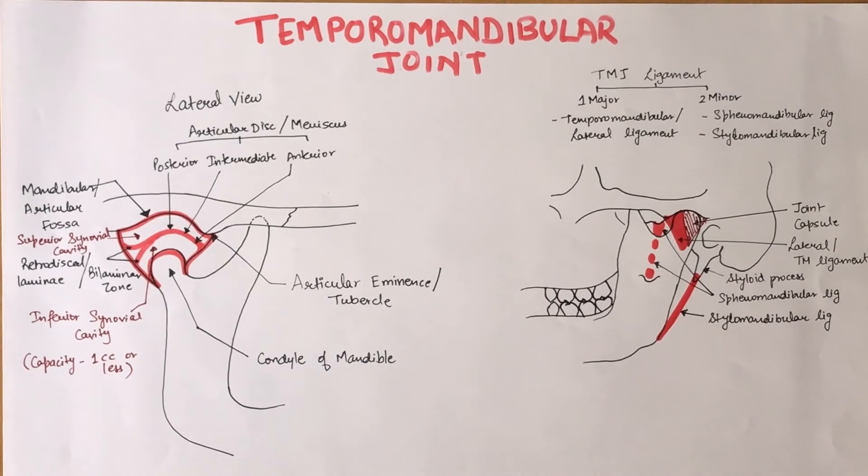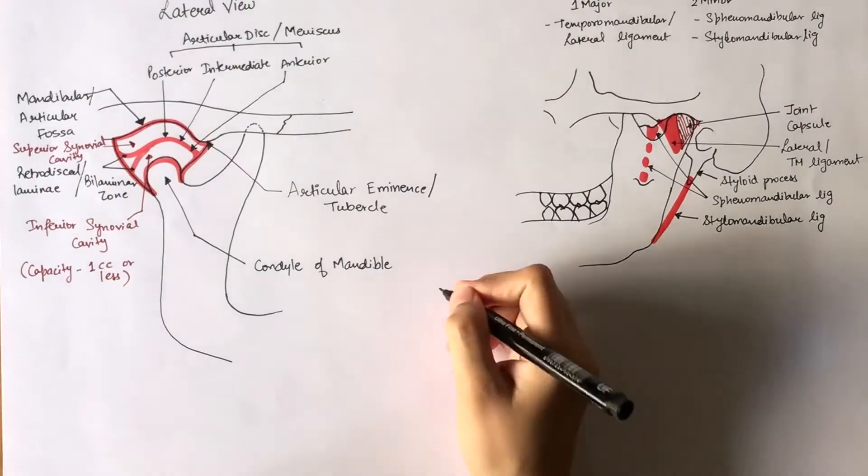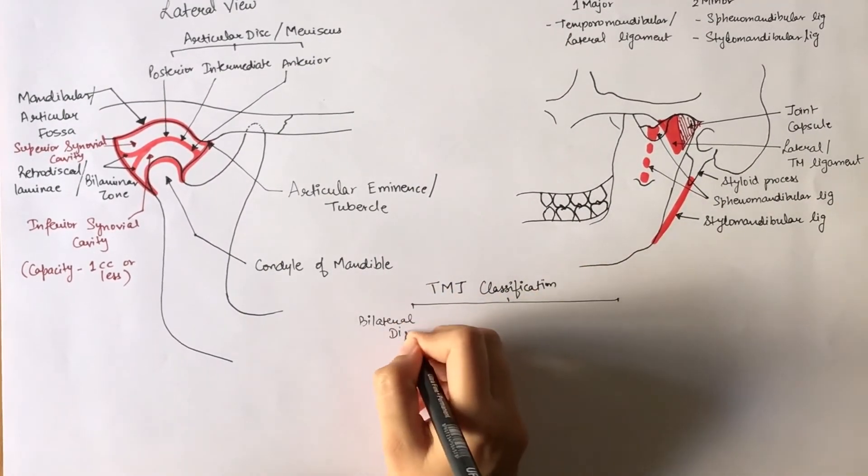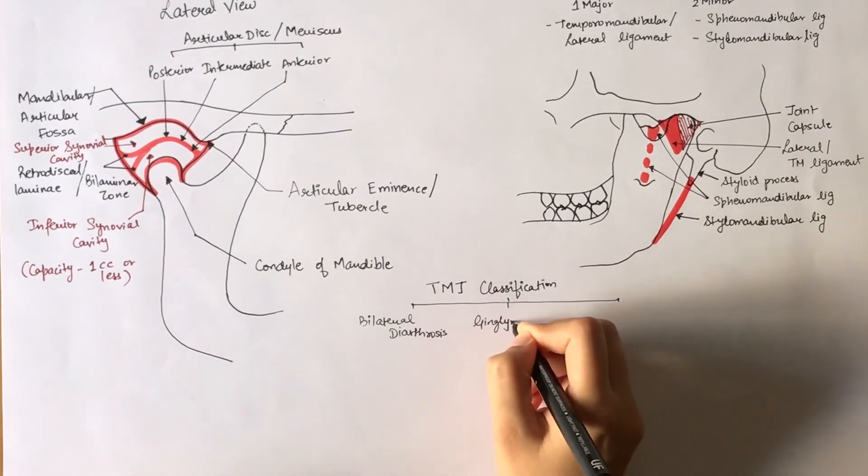Next, let's look into the temporomandibular joint classification. I'll be talking about three types: bilateral diarthrosis, ginglymoarthrodial joint, and compound joint. There's also a fourth type, that is complex joint, which I will touch on lightly.